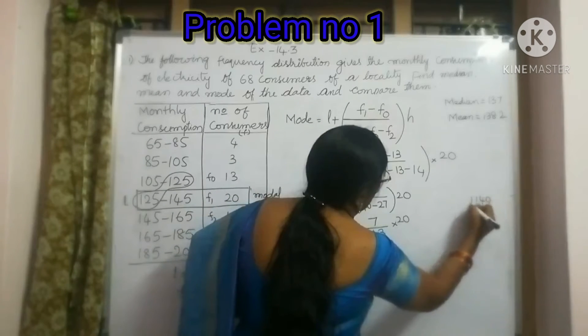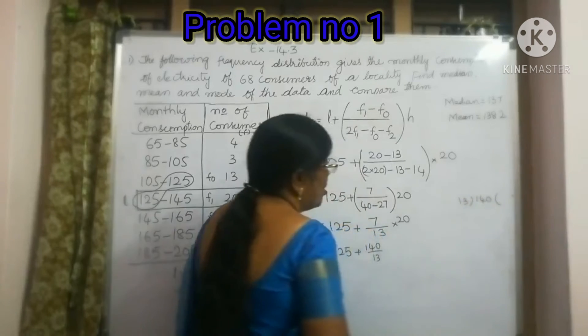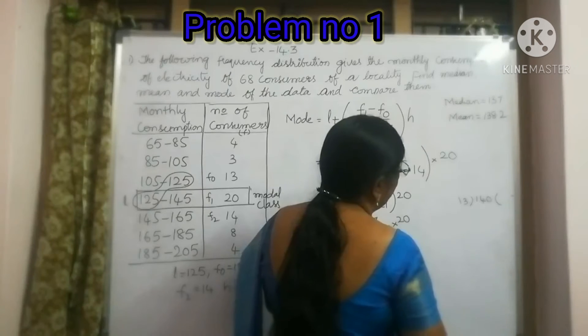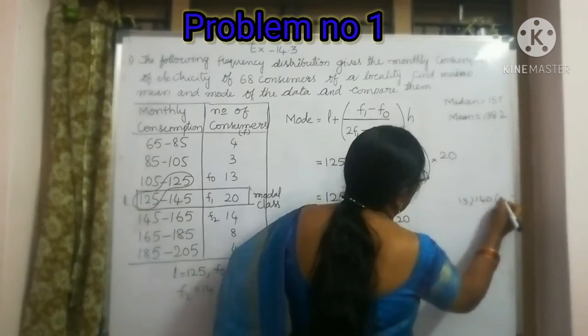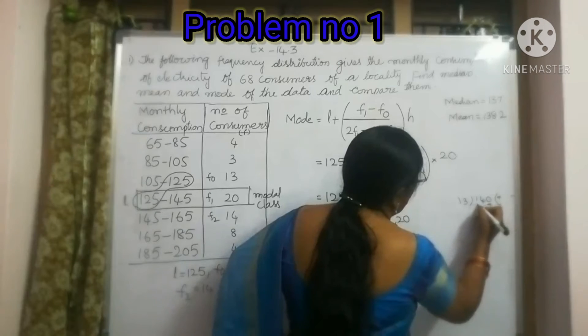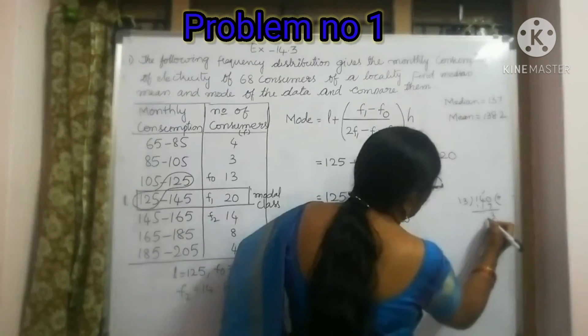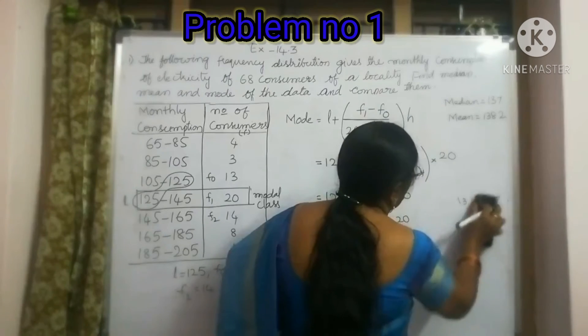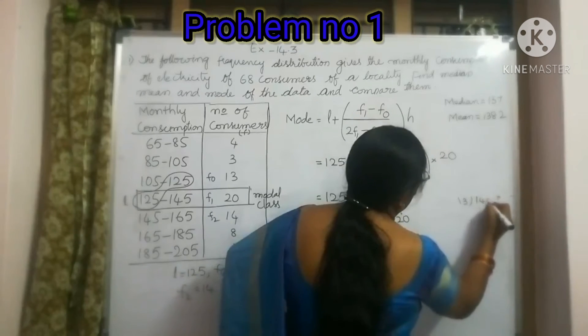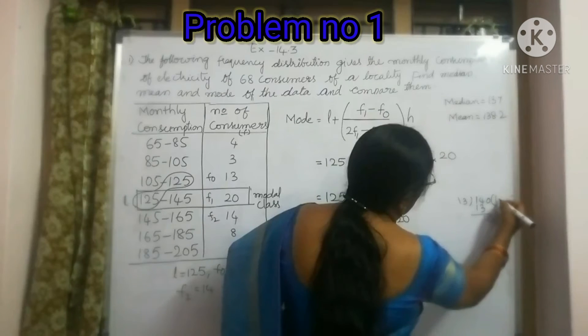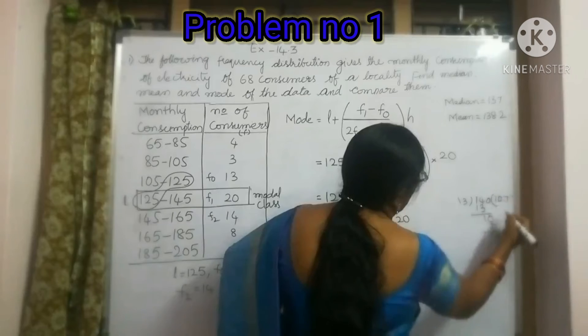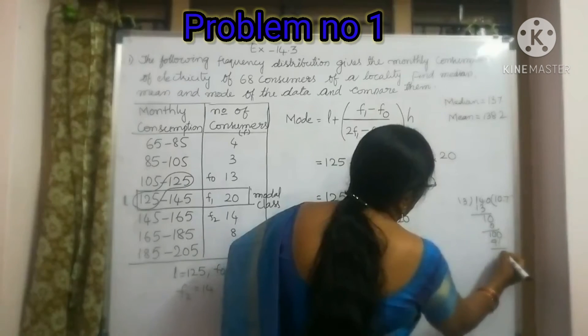140 divided by 30... Sorry, 13. 13 ones are 13, this is 10. So 13 tens are 130. 13 sevens are 91.